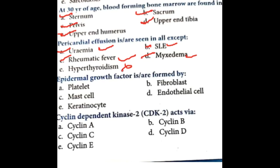Epidermal growth factor is found in platelets and keratinocytes. Epidermal growth factor is actually produced from platelets, keratinocytes, macrophages, and salivary glands also.